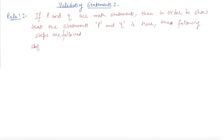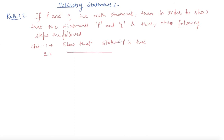Step number one: show that statement P is true. Step two: show that statement Q is true. So, if we need to show that statement P and Q is true, then we need to show individually that both are true.